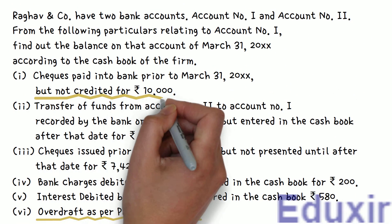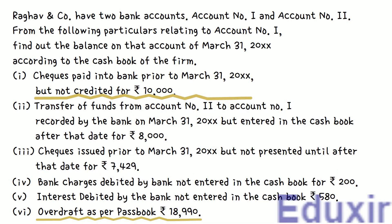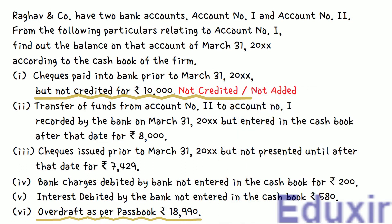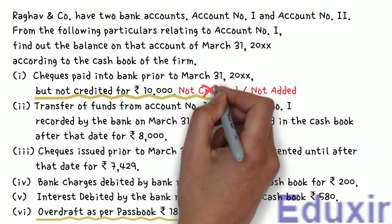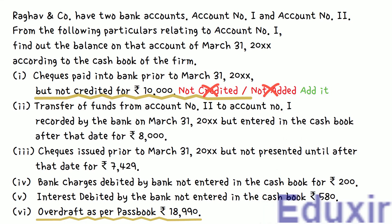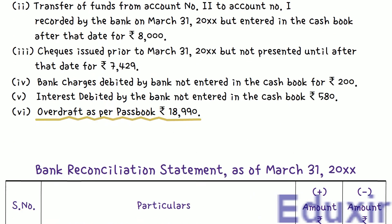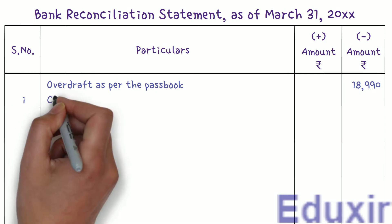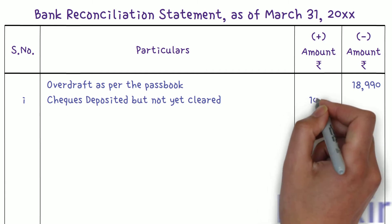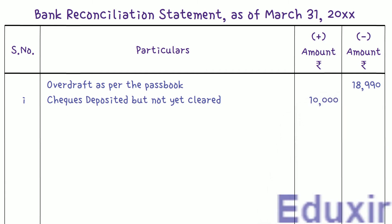Here, it is given that a check for 10,000 rupees is paid into the bank but not yet credited. Before depositing this check, the business would debit this amount in the cashbook. But due to the timing difference, this check is not yet collected by the bank by the time the bank statement is received, so it is not yet credited in the passbook. We need to add this amount to the passbook balance to get the cashbook balance. Let us write the particulars as 'check deposited but not yet cleared' and enter 10,000 rupees in the plus amount column.